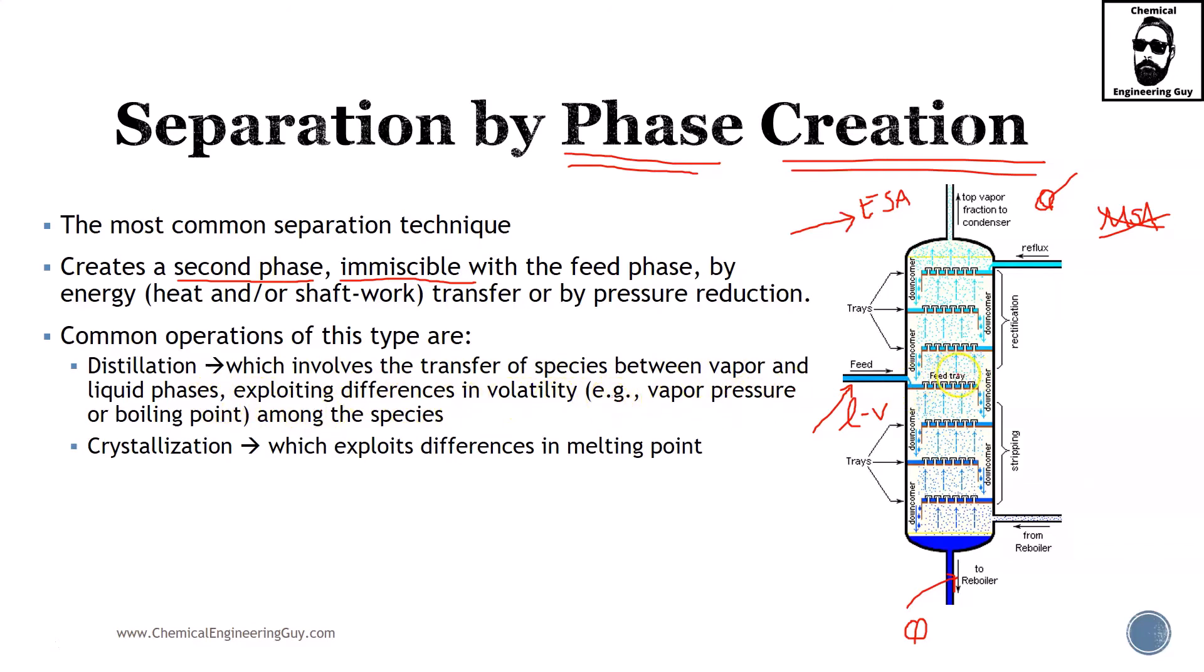For instance, here we are exploiting the vapor pressure, which can be changed with temperature, technically speaking, the heat that we are removing and adding in the condenser and reboilers.